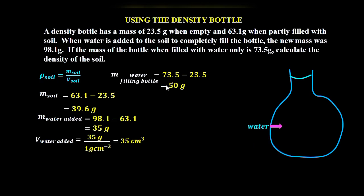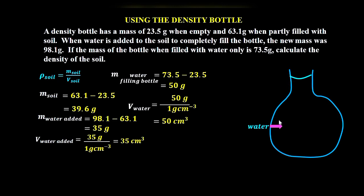The volume of water filling the bottle is mass over density: 50 grams divided by 1 gram per cubic centimeter, giving 50 cubic centimeters. As stated earlier, this volume of water equals the volume of the density bottle — water takes up the shape and volume of its container, which in this case is the density bottle. Therefore, the volume of the density bottle is 50 cubic centimeters.